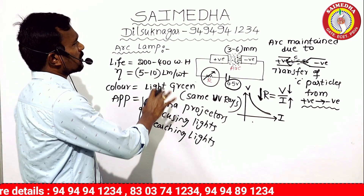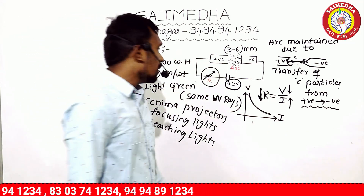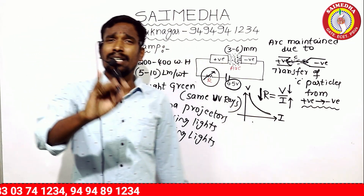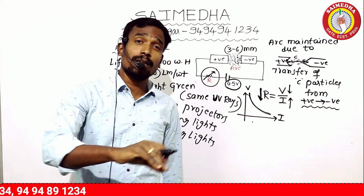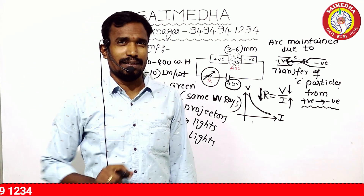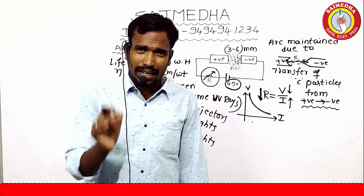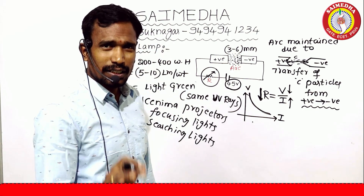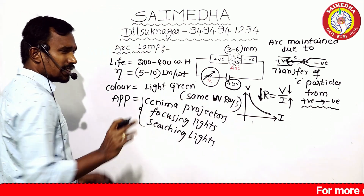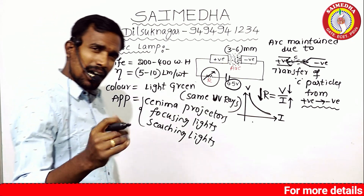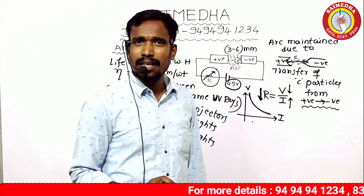This is how the question will be asked about the arc lamp. For other lamps, the parameters include color, coating, gas, starting time, and starting color. These are also covered. In the illumination topic, whether you take it online or offline, or prepare alone, this is the content.